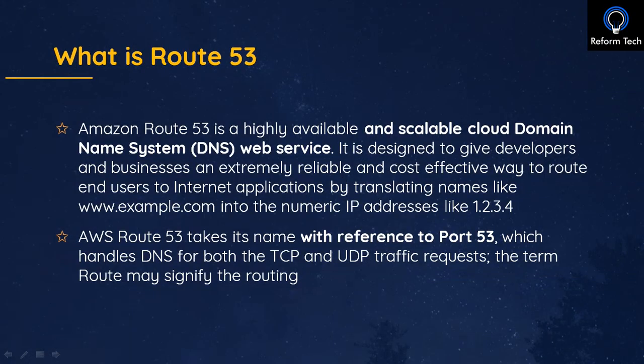Route 53 is a highly scalable DNS server — DNS meaning Domain Name System. What it does is route end users to internet applications by translating names. For example, if you type www.google.com, it has an IP address behind it. Every web address you type has an IP address behind it, and we cannot remember all those IP addresses, so we have domain names like google.com which are easy for humans to remember.